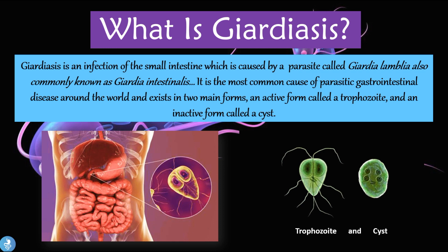Giardiasis is a very common parasitic disease and the most common cause of parasitic GI diseases around the world, especially in developing countries. It is caused by Giardia lamblia or Giardia intestinalis, which takes on two main forms: the trophozoite form, the active state in which it causes disease and symptoms, and the cyst, its inactive form.